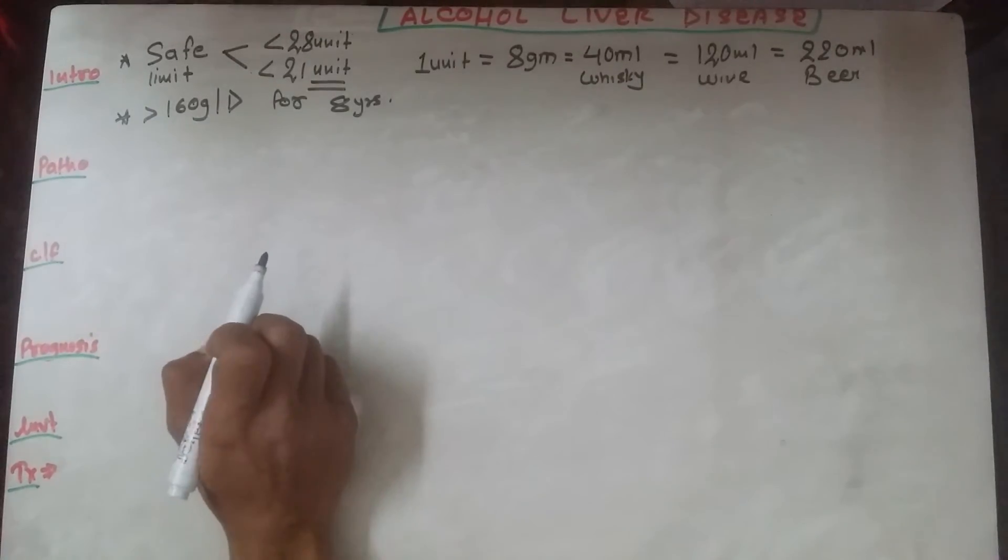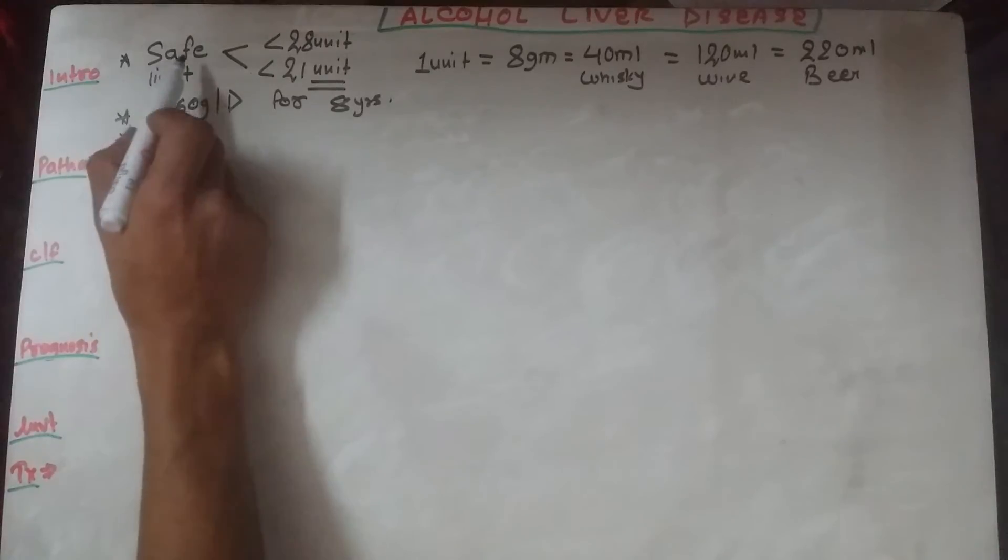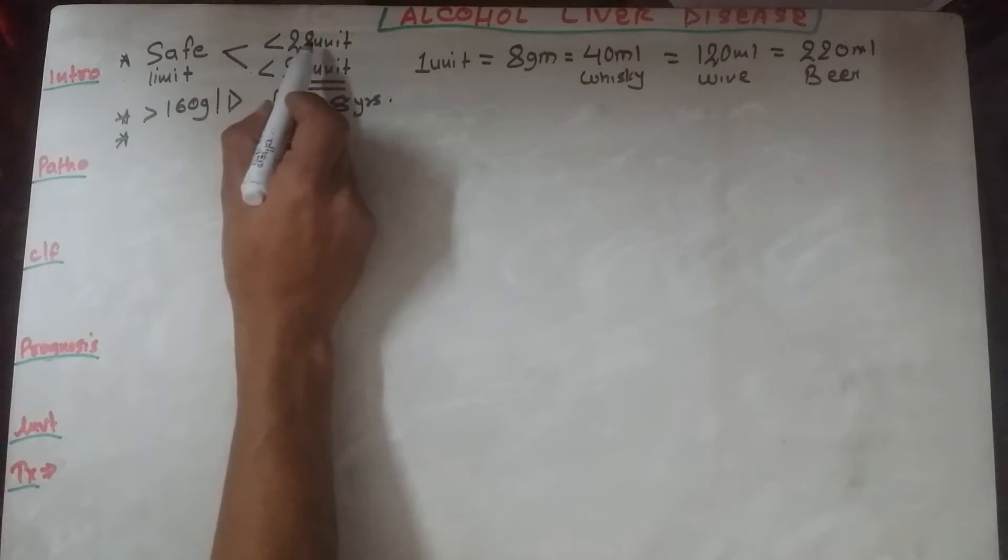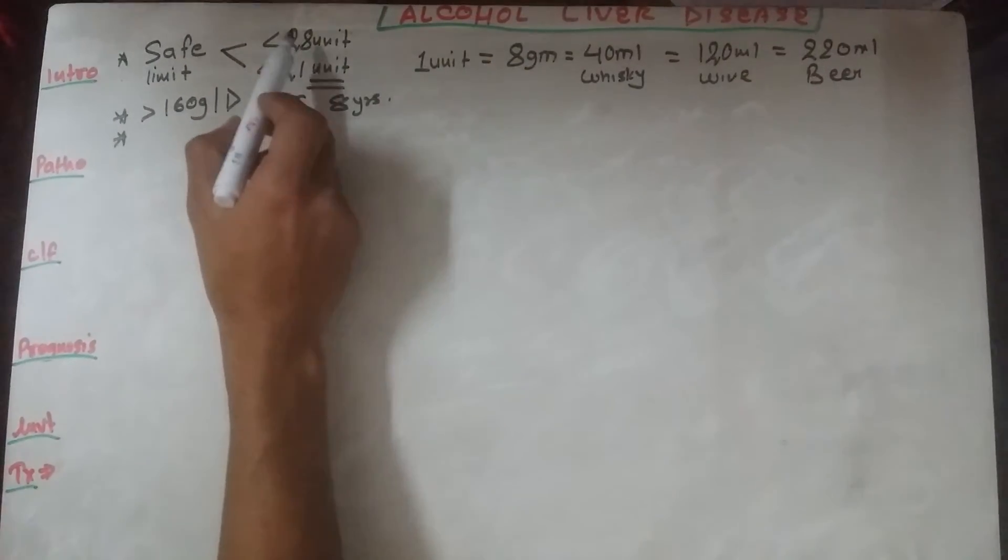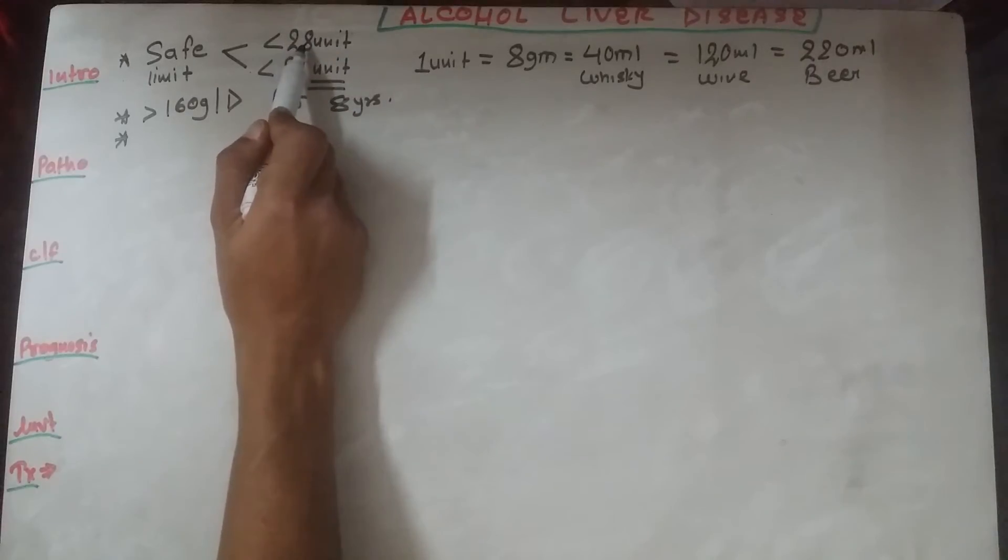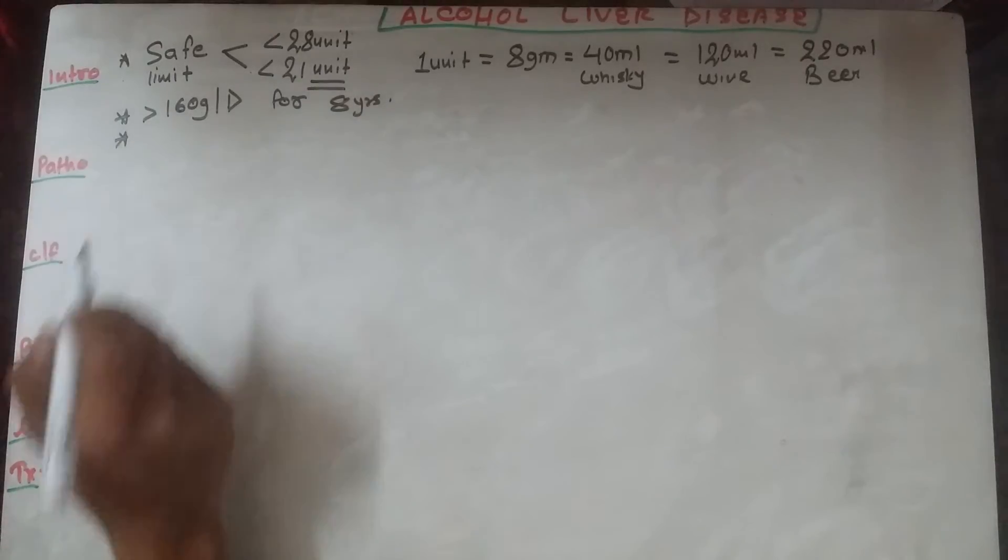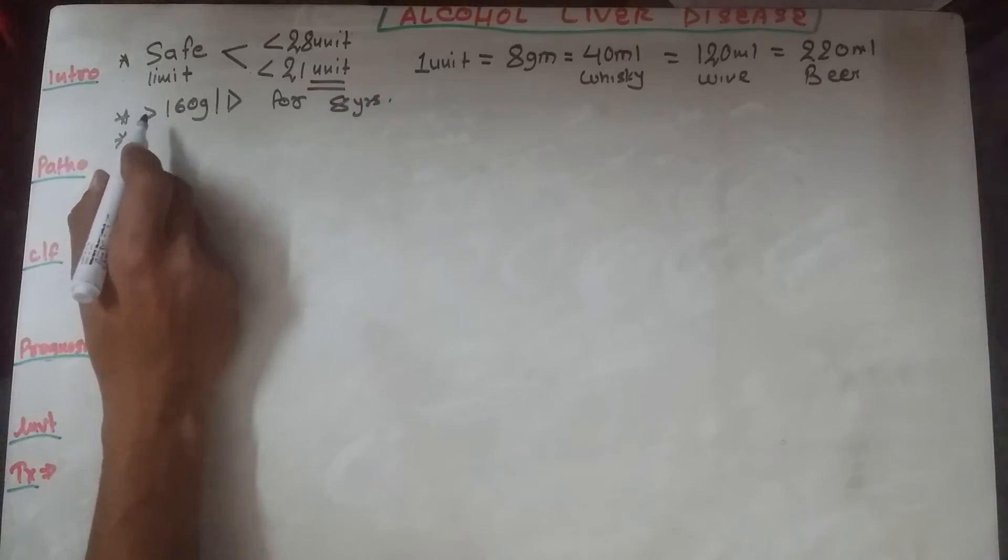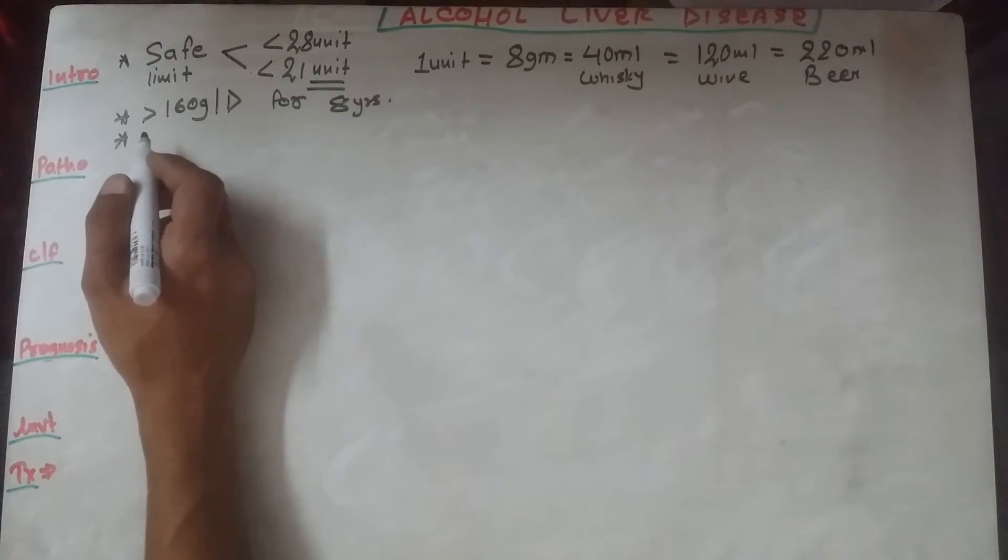Development of cirrhosis will increase by six-fold if the safe limit is doubled. Suppose the safe limit for a male was 28 units and a person drinks two times that amount, then the risk for cirrhosis will increase by six times. This is the third thing one should know about the association of alcohol with liver disorder.